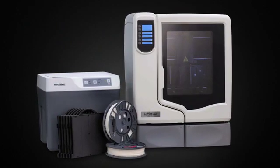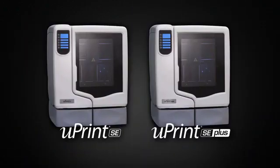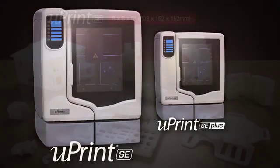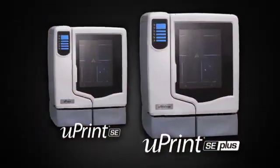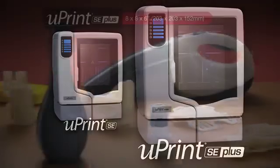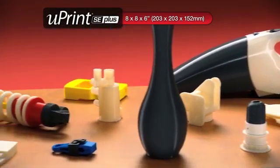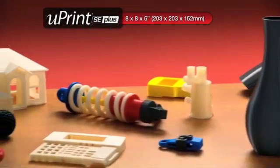There are no hidden costs and nothing extra to buy. And you have a choice of two models. The U-Print SE for ivory models up to 8 x 6 x 6 inches. Or the U-Print SE Plus with a larger build envelope, faster print speed, and your choice of 9 modeling colors.